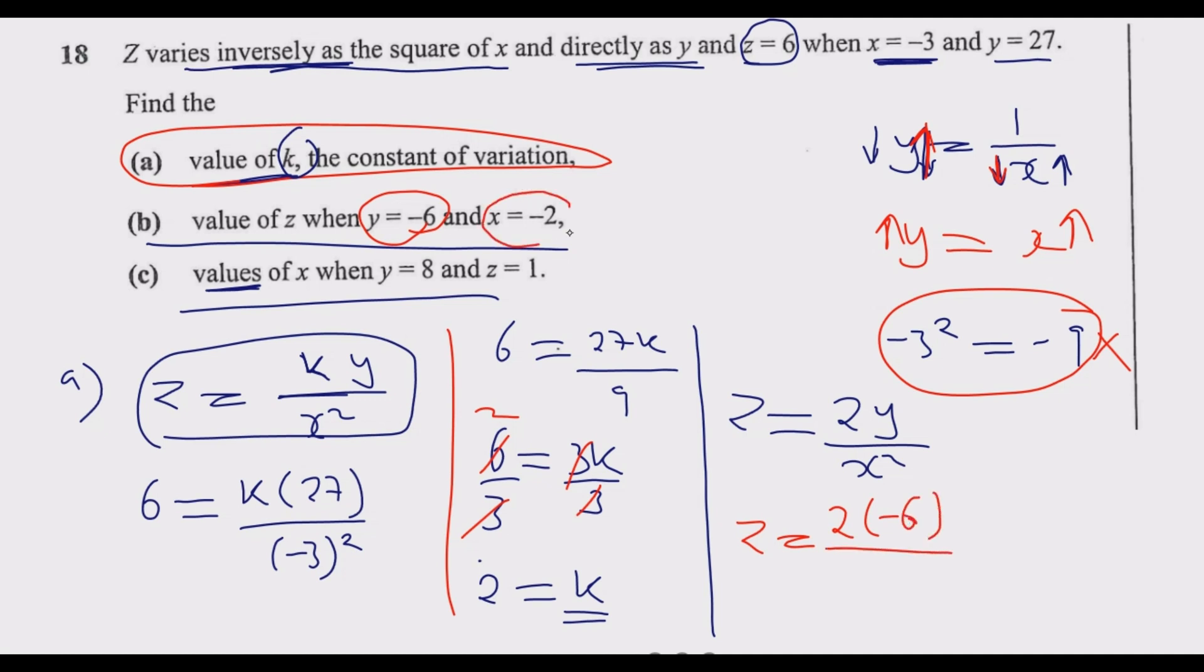Divide by x which is negative 2 - watch out, it has to be in brackets - then square it because this x is x squared. After this, simplify: 2 times negative 6 is negative 12.